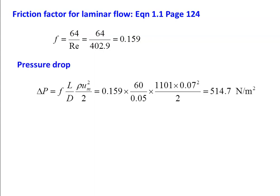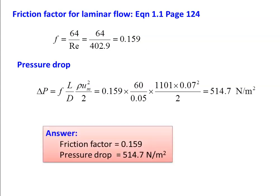Pressure drop: ΔP = f·(L/D)·(ρ·U²/2) = 0.159 × (60/0.05) × (1101 × 0.07²/2) = 514.7 N/m². Answer: friction factor = 0.159 and pressure drop = 514.7 N/m².